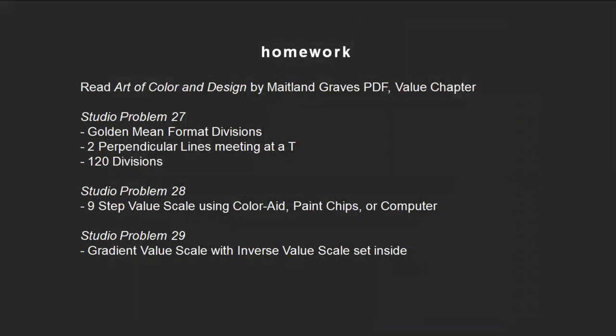Let's look at your homework. I want you to read The Art of Color and Design by Maitland Graves — the PDF available in your files folder on Canvas, the value chapter. Studio Problem 27: I want you to do golden mean format divisions — give me that 1 by 1.618 format, 120 times — doing the same thing you've done with squares and 5x7s, two perpendicular lines meeting at a T. Studio Problem 28: create a nine-step value scale. You can use the color aid packet from the suggested materials, use paint chips, or do this on a computer. Even that means you can look up a value scale and print it out, but I do want this to be in your book. We looked at a nine-step value scale at the beginning of this lecture, so you should know what it looks like.